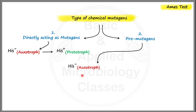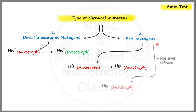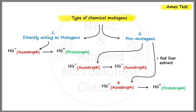The second type is pro-mutagens. When pro-mutagens are added to the histidine auxotrophic strain, the strain still remains histidine auxotrophic — it will not regain its ability to produce histidine. This is because pro-mutagens require some kind of metabolism for their activation. So when working with pro-mutagens, we need to add rat liver extract along with the pro-mutagen mixture. The rat liver extract provides liver enzymes that act on these inactive pro-mutagens and convert them into their active mutagenic form, upon which the auxotroph converts to prototroph.